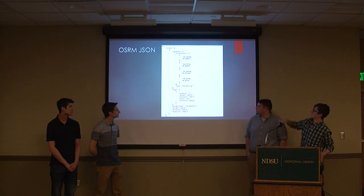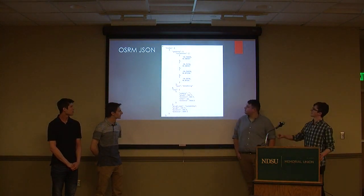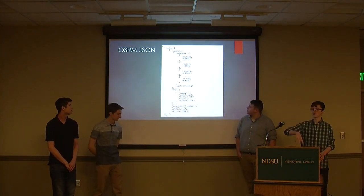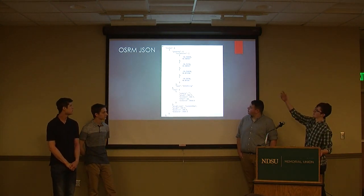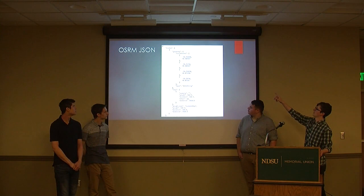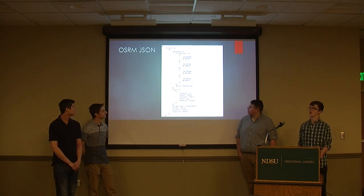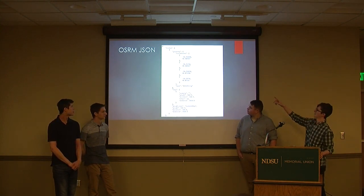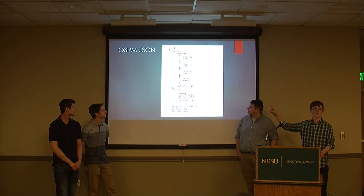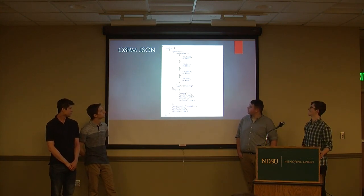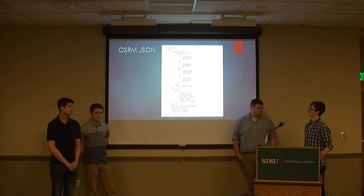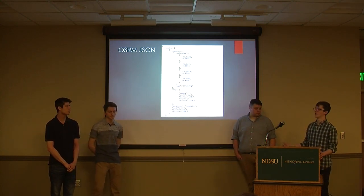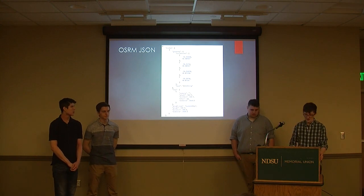This is just an example of what the OSRM JSON looks like. We pass in the starting latitude/longitude and ending latitude/longitude, and it returns this response. All we really need out of it is the geometry coordinates — just that list. This is a simplified route from my apartment to the old Broadway, but if we set a parameter in the API call, it'll send back around 200 coordinates to get a really fine, detailed line.